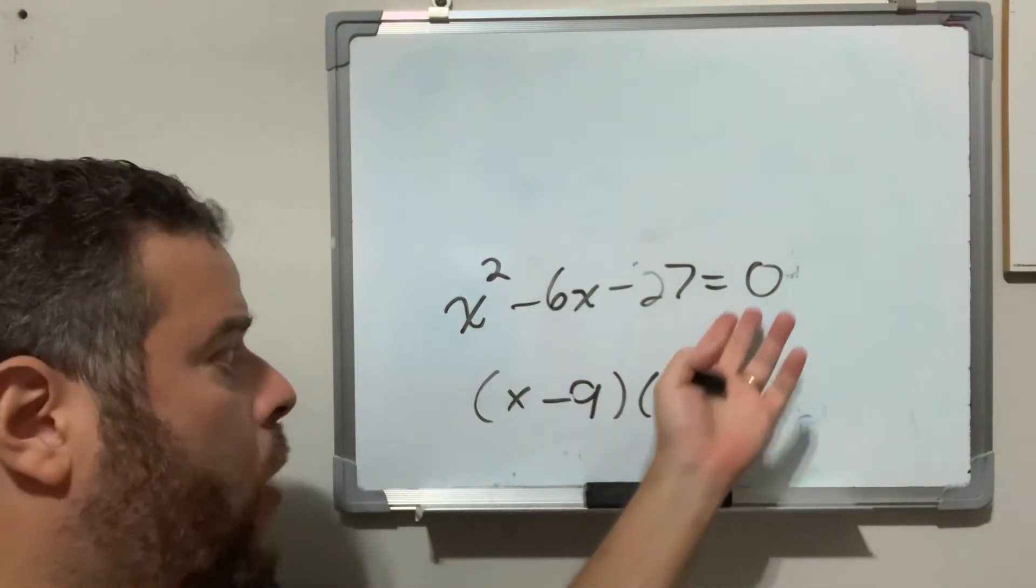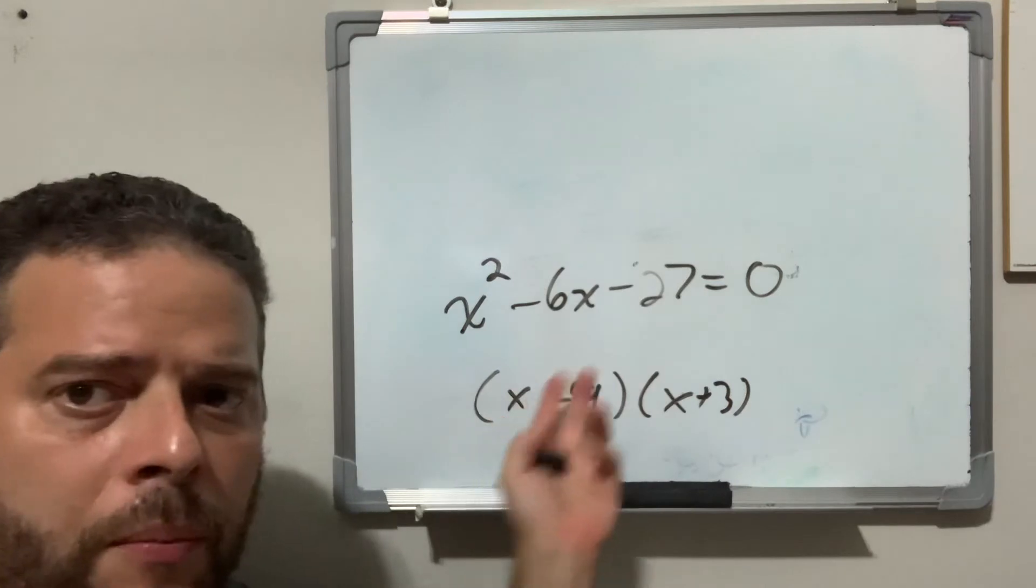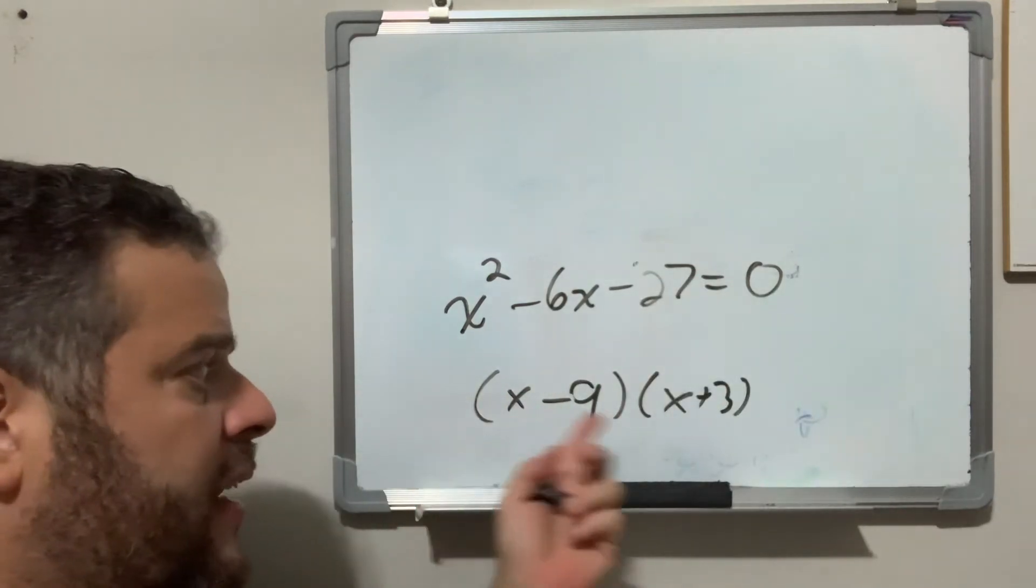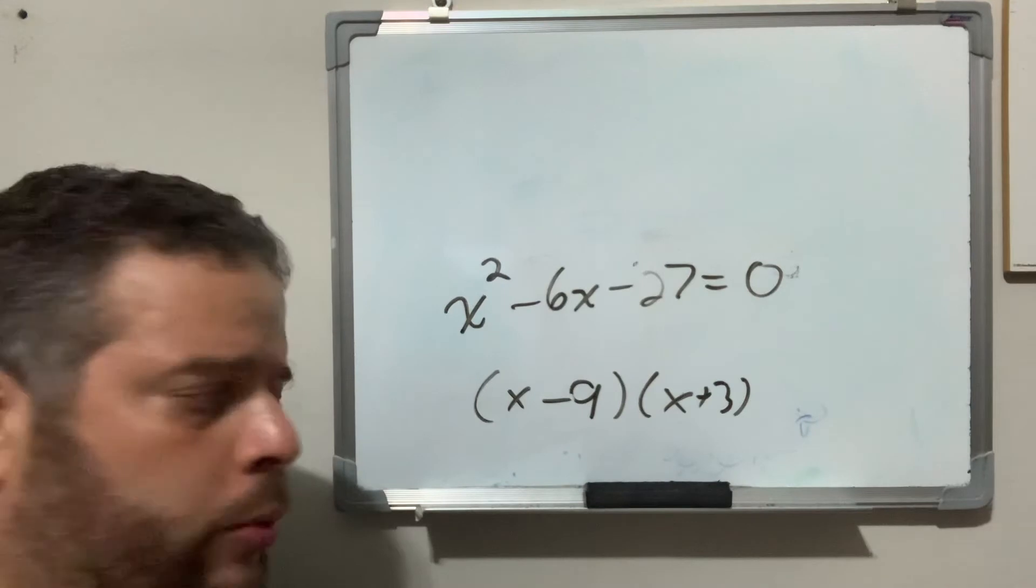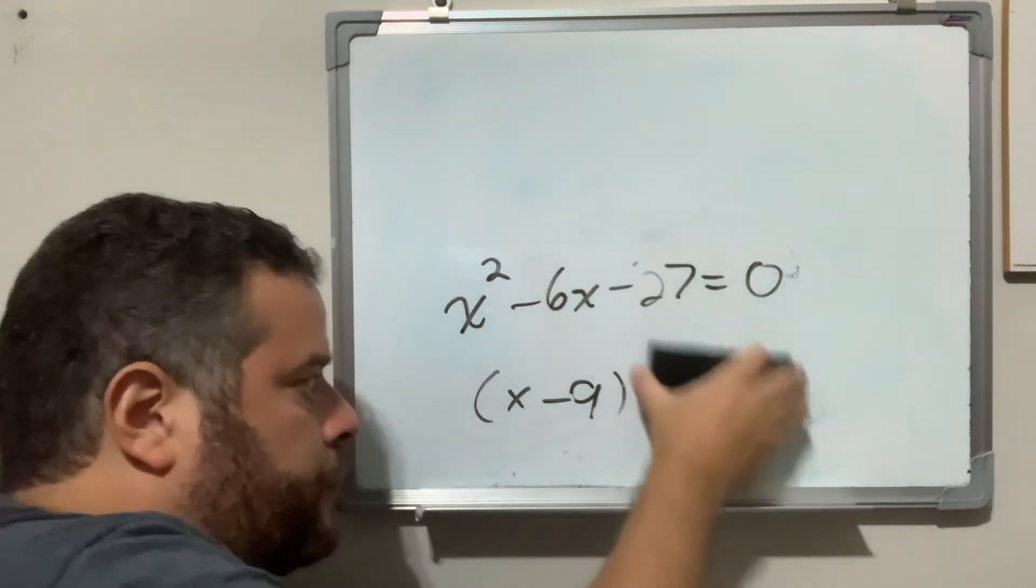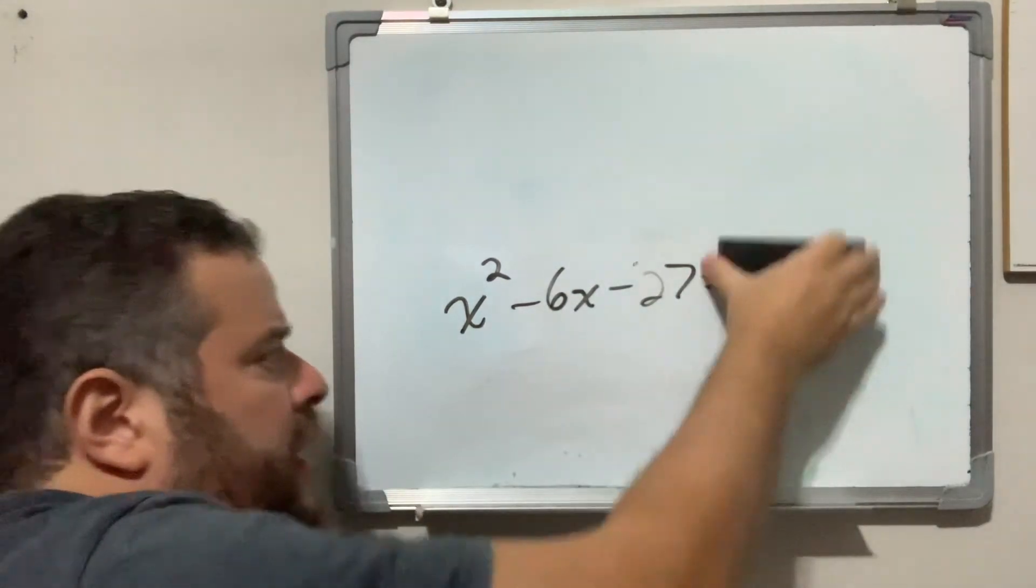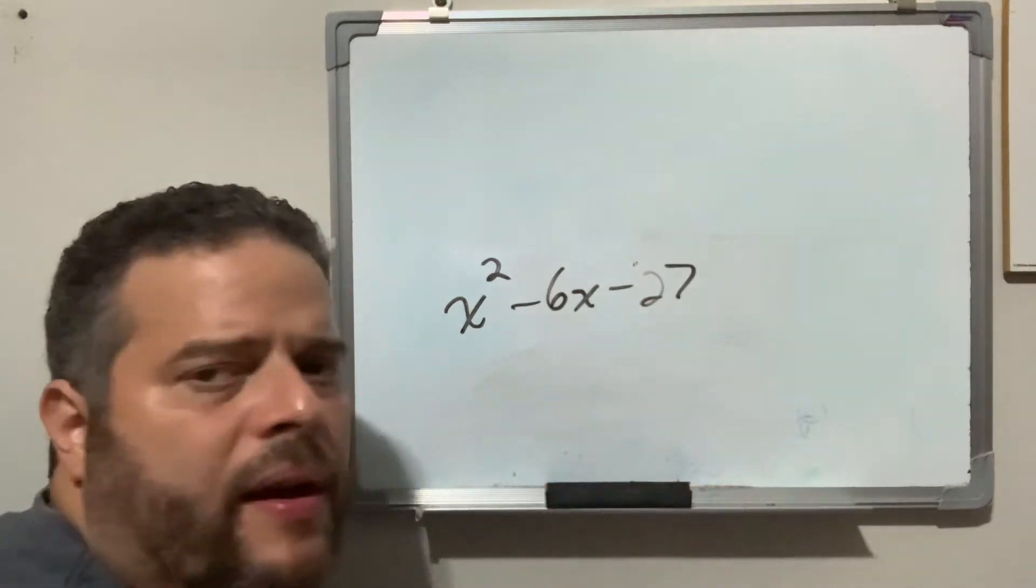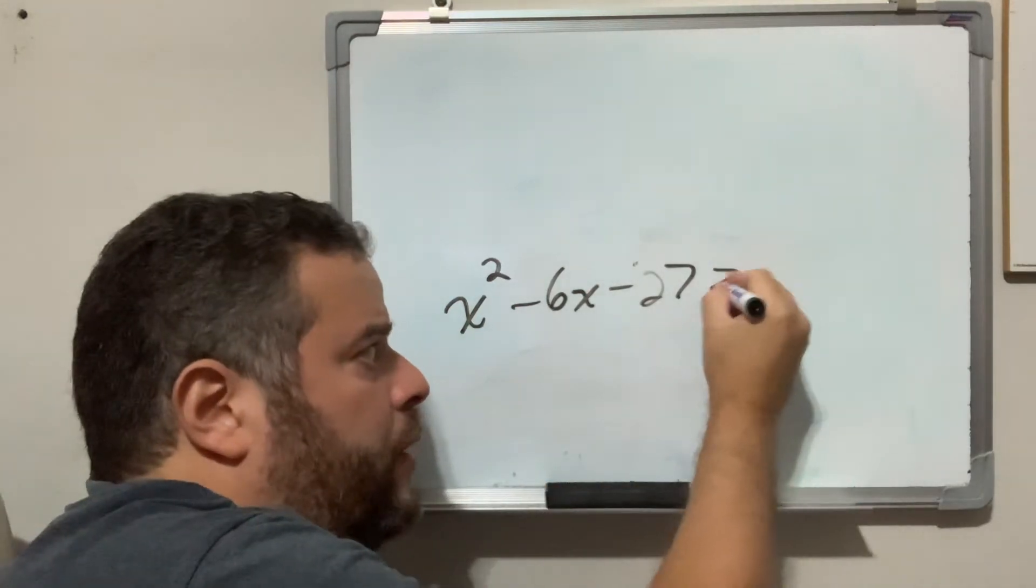Now when it's an equality, the solutions are pretty much the numbers that give you 0, pretty simple. Here I'd get 9 and negative 3, these would be the solutions. However, when we're dealing with inequalities, the process is not as straightforward.